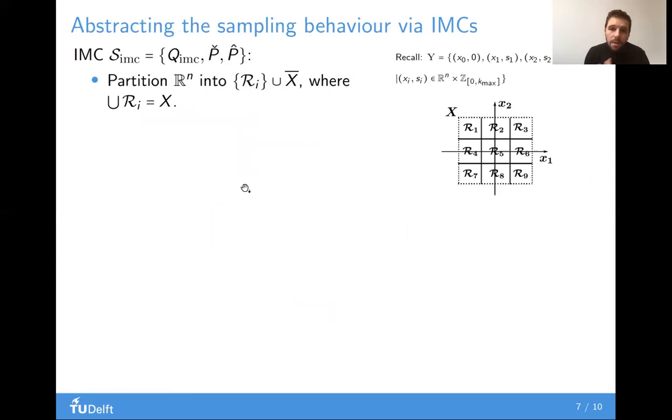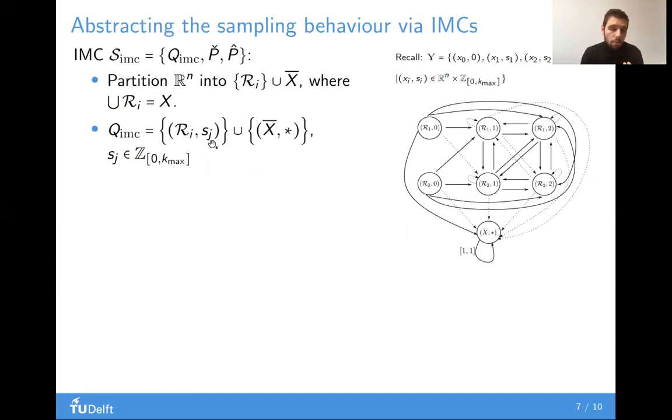To abstract the sampling behavior via IMCs, first we partition R^n into two parts, a bounded set X and its complement, and we further partition X into polytopic regions R_i. Then, because we want to encapsulate information of inter-sampling times in the IMC's behavior, the states of the IMC are actually all possible combinations of regions R_i and inter-sampling times s_j, plus just one more state X complement for all states outside X and all possible inter-sampling times.